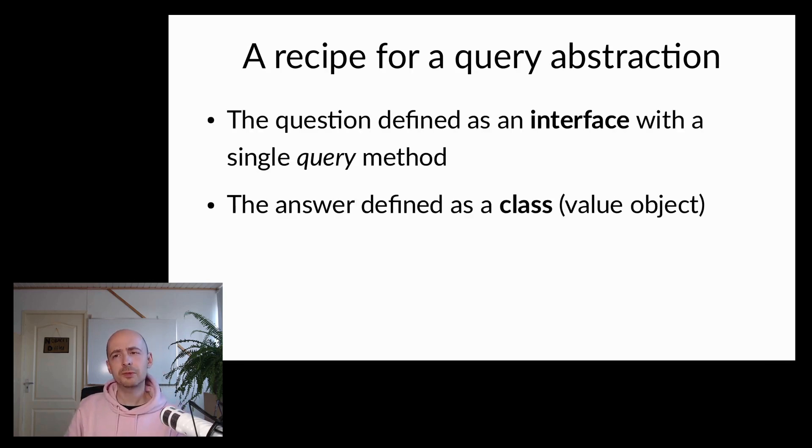Whenever I'm looking for an abstraction for a query in my domain code, I use the following recipe. First, I define the question, which becomes an interface with a single query method. Then, I define the answer as a single class, which will follow the design rules of a value object.